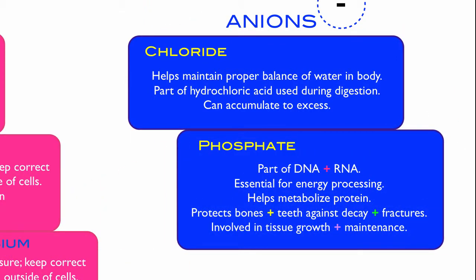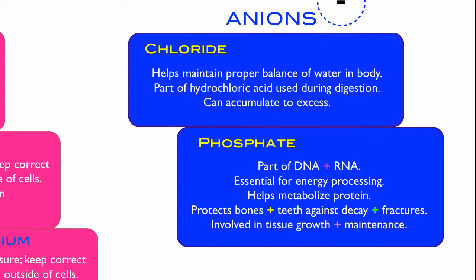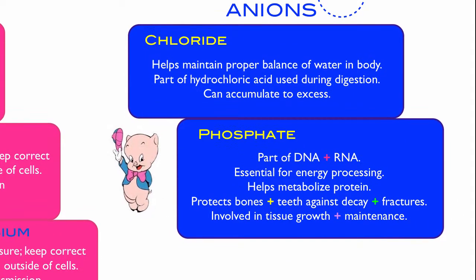Phosphate is part of DNA and RNA — the blueprints of who you are, contained in every cell. Phosphate is essential for energy processing, helps metabolize protein, protects the bones and teeth against decay and fractures, and is involved in tissue growth and maintenance. It's found naturally in nuts, cheese, and pork.